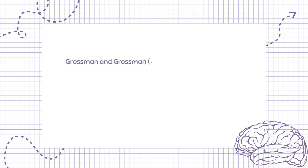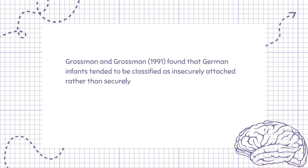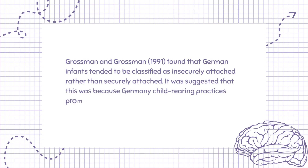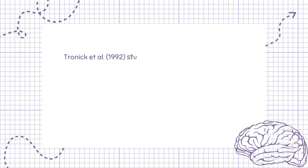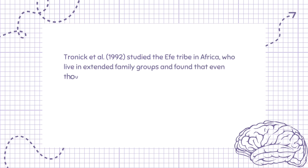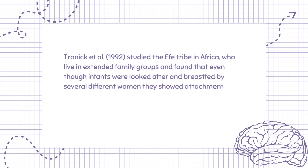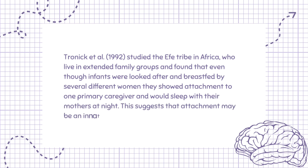Grossman and Grossman (1991) found that German infants tended to be classified as insecurely attached rather than securely attached. It was suggested this was because German child-rearing practices promote independence and interpersonal space between infants and parents. Tronick et al. (1992) studied the Efe tribe in Africa, who live in extended family groups, and found that even though infants were looked after and breastfed by several different women, they showed attachment to one primary caregiver and would sleep with their mothers at night. This suggests that attachment may be an innate biological process as Bowlby suggested.